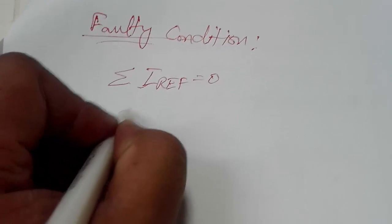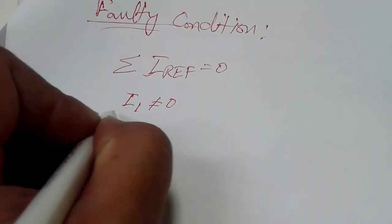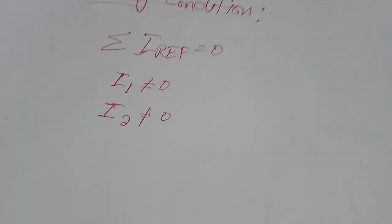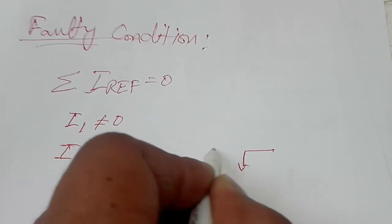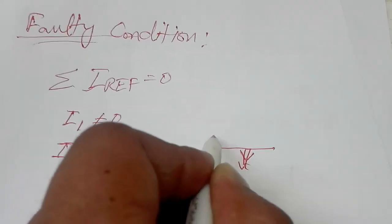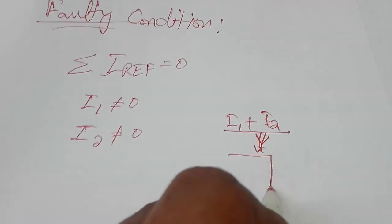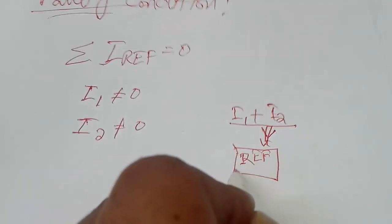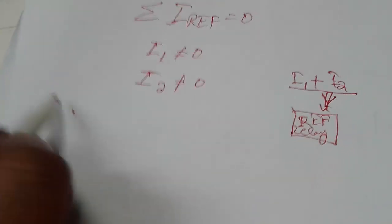In a faulty condition, I1 will not be equal to zero — it will carry some value — and I2 will also not be equal to zero. Both currents flow through the relay and are added up: I1 plus I2. This summation goes into the REF relay, and due to this summation it will reach a set trip value, which we will show during the injection test.